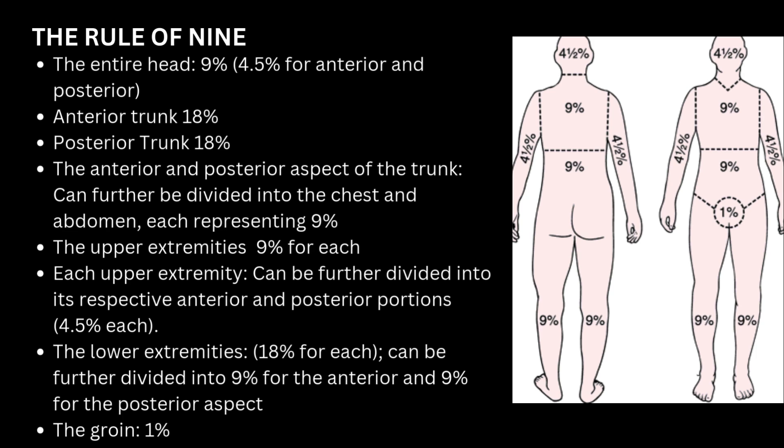The rule also says the whole anterior trunk is 18%. The anterior trunk is subdivided into the anterior chest region and the anterior abdominal region — the chest is 9% and the abdominal region is 9%. Similarly, the posterior trunk is also 18%, subdivided into posterior chest at 9% and posterior abdominal at 9%.